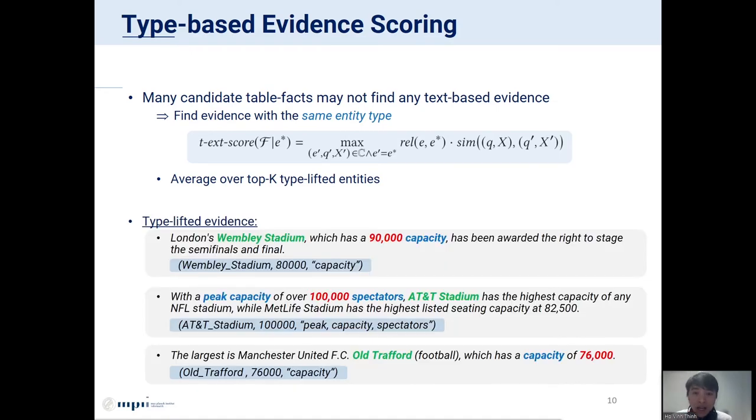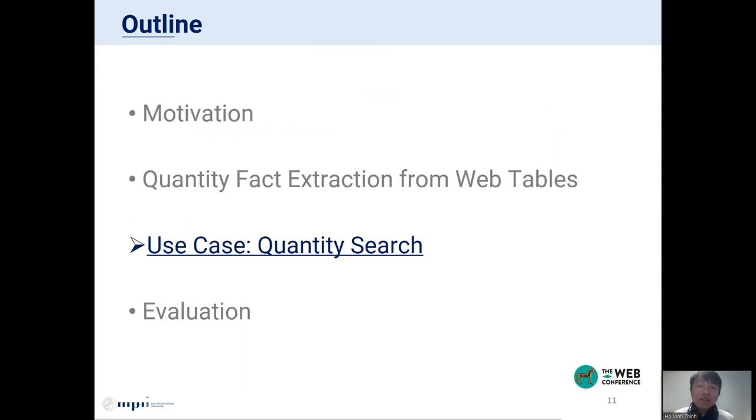So, with this method, for the candidate QFact that we are considering as before, we not only find the exact entity evidence, but also find text snippets about capacity of other stadiums. This is a strong evidence that when we talk about capacity, it's likely that we talk about stadiums rather than talking about the team. So far, we have described our approach for extracting QFacts from web tables.